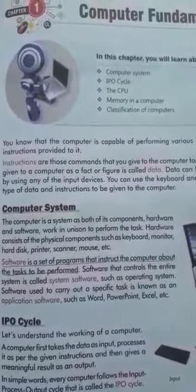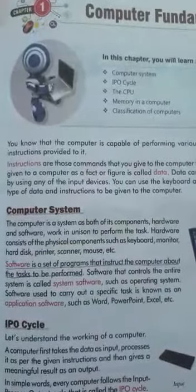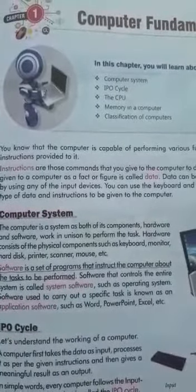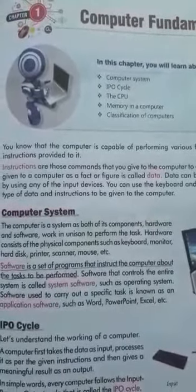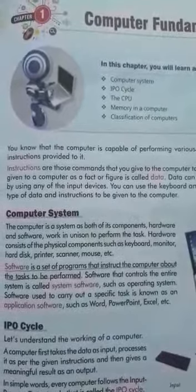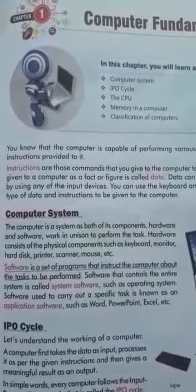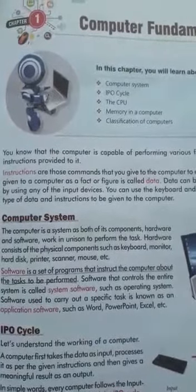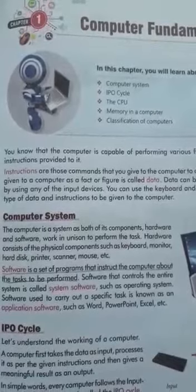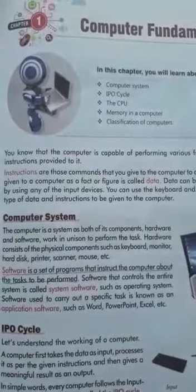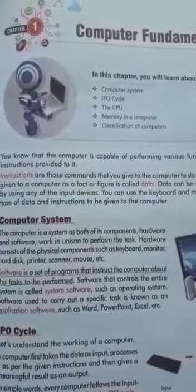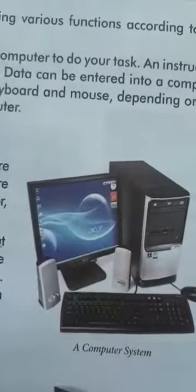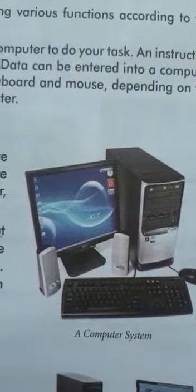Software is a set of programs that instruct the computer about the task to be performed. Software that controls the entire system is called system software, such as the operating system. Software used to carry out a specific task is known as application software, such as Word, PowerPoint, and Excel.